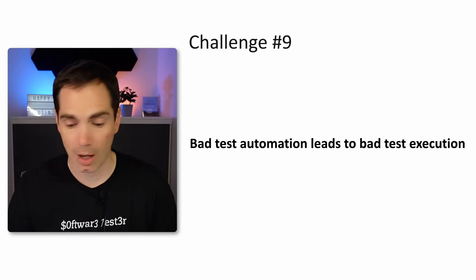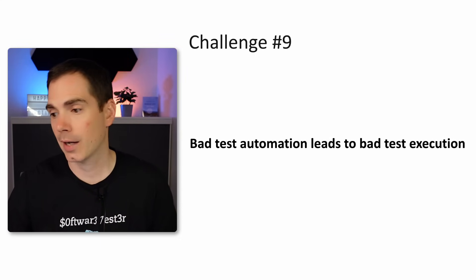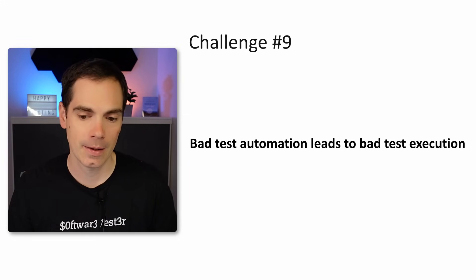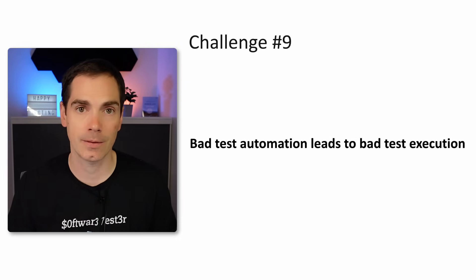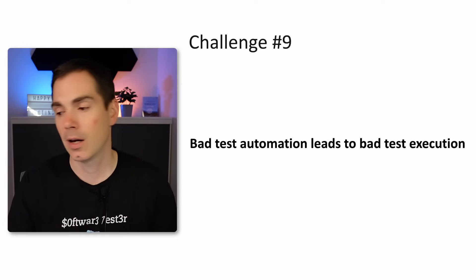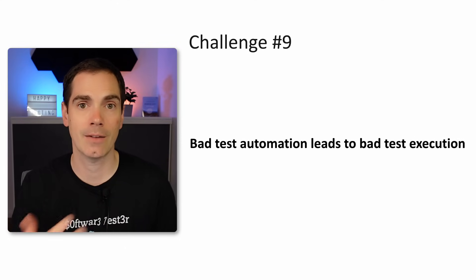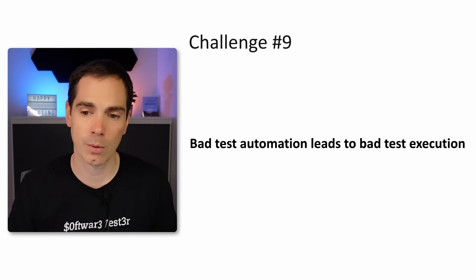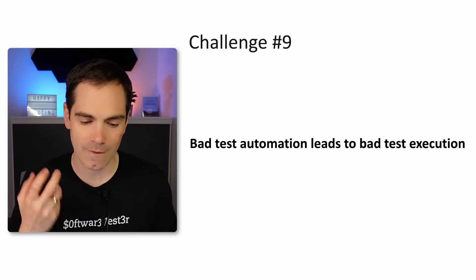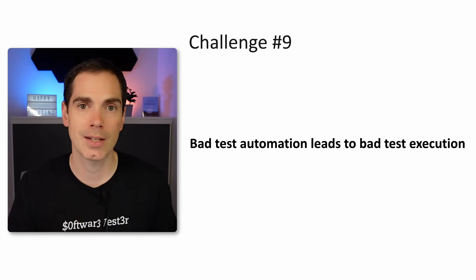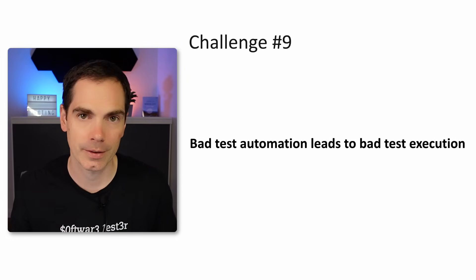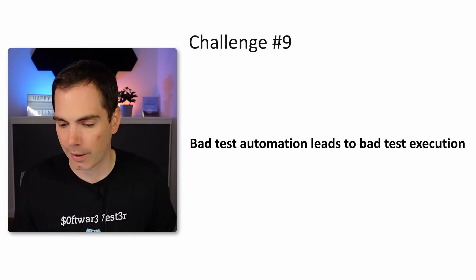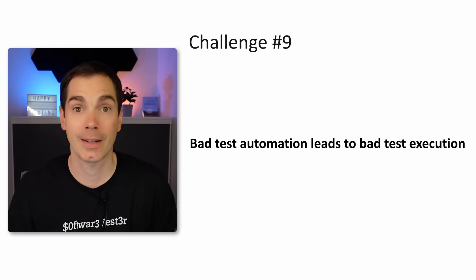The last challenge: bad test automation leads to bad test execution. You've likely seen flaky tests, tests that take too long, and tests nobody trusts. If tests are poorly written, the results will be poor and nobody will rely on them. You have to fight flakiness — check whether the system is flaky, whether the test environment is unstable, whether the test data strategy is wrong, and whether you have the right patterns and tooling. Invest a lot of time in your test automation strategy to build a reliable framework, because otherwise nobody will trust or use it.